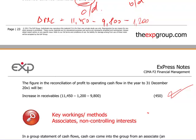We'll stop here and do a separate video for the next two items specific to a consolidated cash flow statement. You have now covered what happens with movements in working capital within a consolidated statement of cash flows, and also how to reconcile EBIT with cash flow from operations. Well done, and look forward to seeing you in the next video. Best of luck with your preparations.